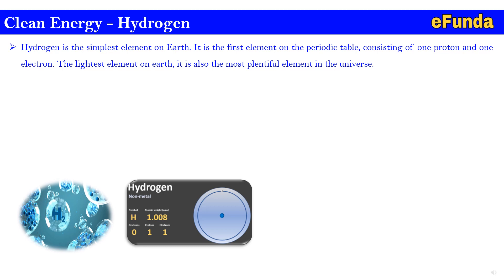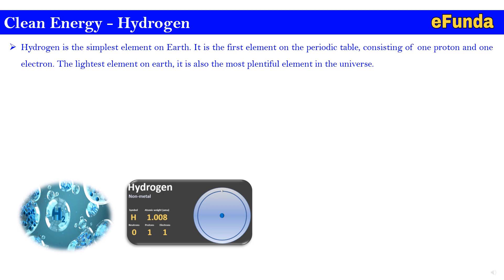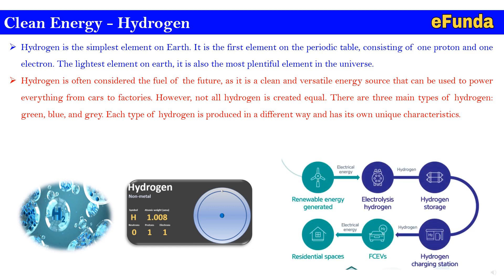Hydrogen is also an extremely versatile fuel. The main types of hydrogen are green hydrogen, blue hydrogen, gray hydrogen, and many others. Hydrogen is often considered the fuel for the future as it is a clean and versatile energy source that can be used to power everything from cars to factories. However, not all hydrogen is created equal — there are three main types: green, blue, and gray — each produced in a different way with its own unique characteristics.